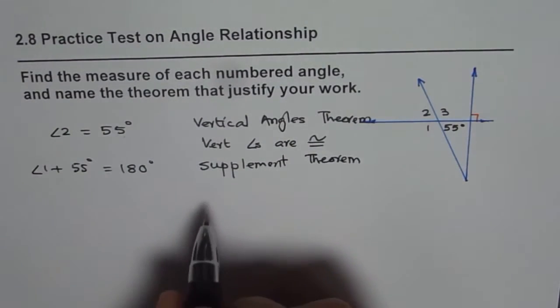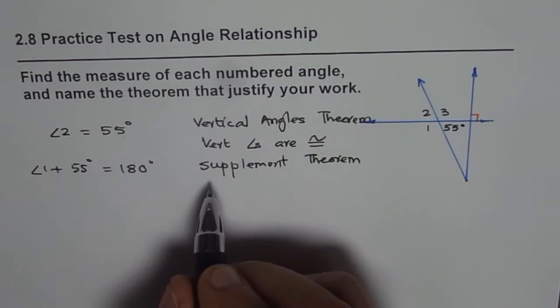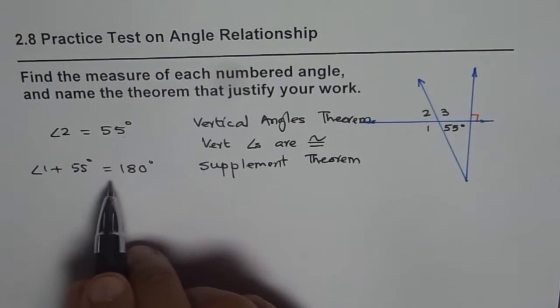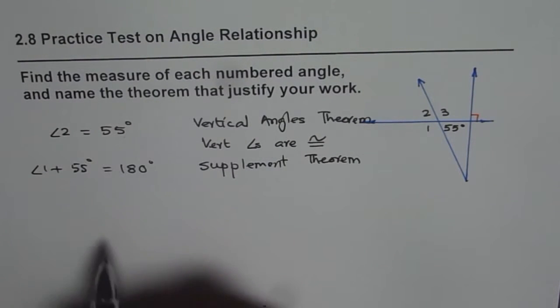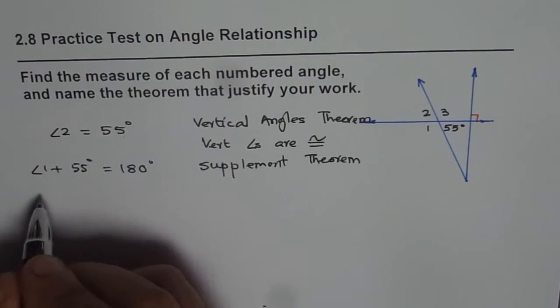They form a linear pair. Since they form a linear pair, their sum should be 180 degrees, and that is supplement theorem. Now, from here we can find the measurement of angle 1.